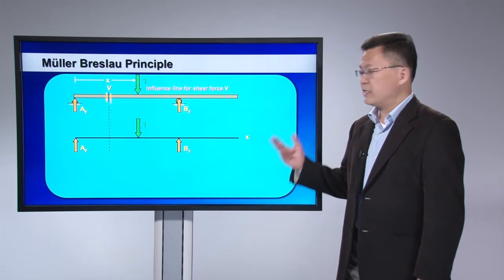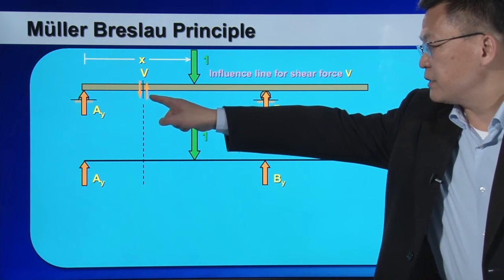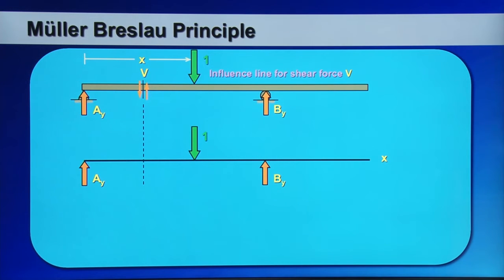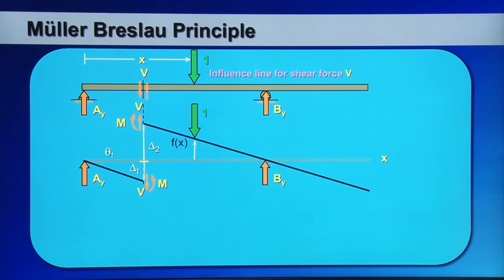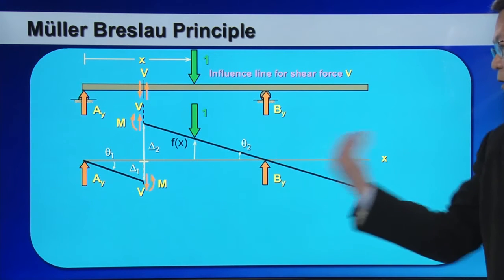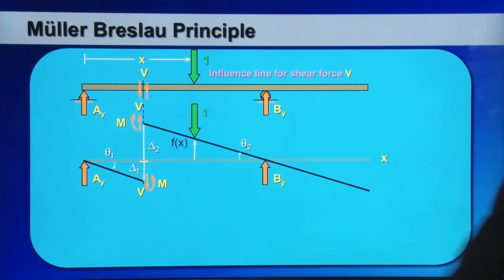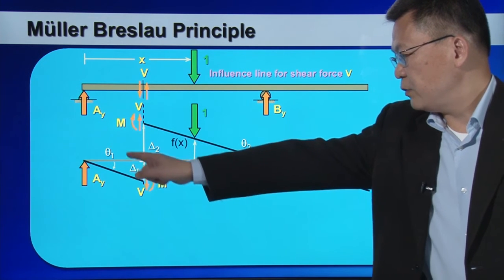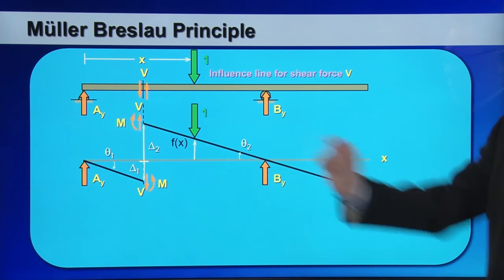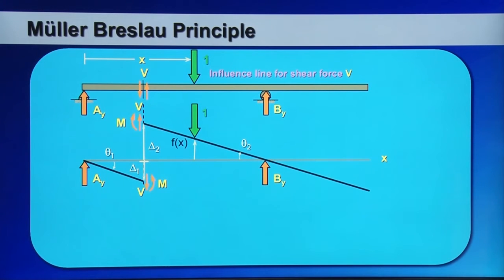Next, I will show how to use the same concept to construct an influence line for shear force at a particular cross-section. To find the influence line for the shear force at that cross-section, properly deflect the shape of the structure: move the left end downward by delta one and move the right end upward by delta two. At the cross-section we have two forces — shear force and bending moment. During the rigid body rotation, you will see rotation angle theta one on the left and theta two on the right.